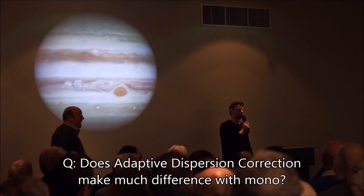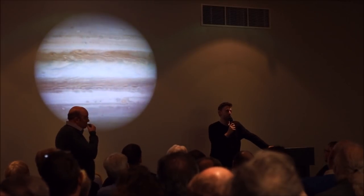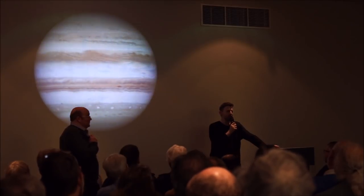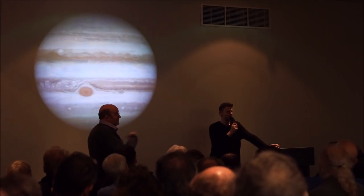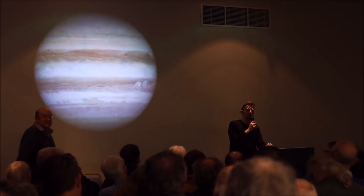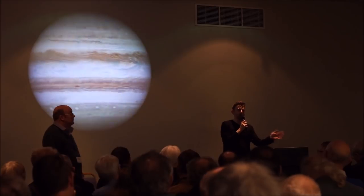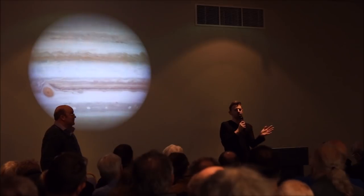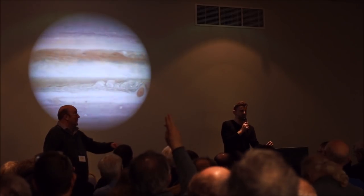Q: You mentioned atmospheric dispersion correction — does it make much difference with mono filters? Yes, particularly with the planets at the altitudes they are in the UK at the moment. With Jupiter and Saturn at only 16 degrees altitude, even with typical RGB filters you would see some benefit from using a dispersion corrector. Using WinJUPOS with Jupiter, you can typically image for around 15 minutes maximum — I typically use 10-minute captures. With Saturn you can get away with maybe 40 minutes. Using WinJUPOS to compensate for rotation makes a massive difference compared to just one sequence.